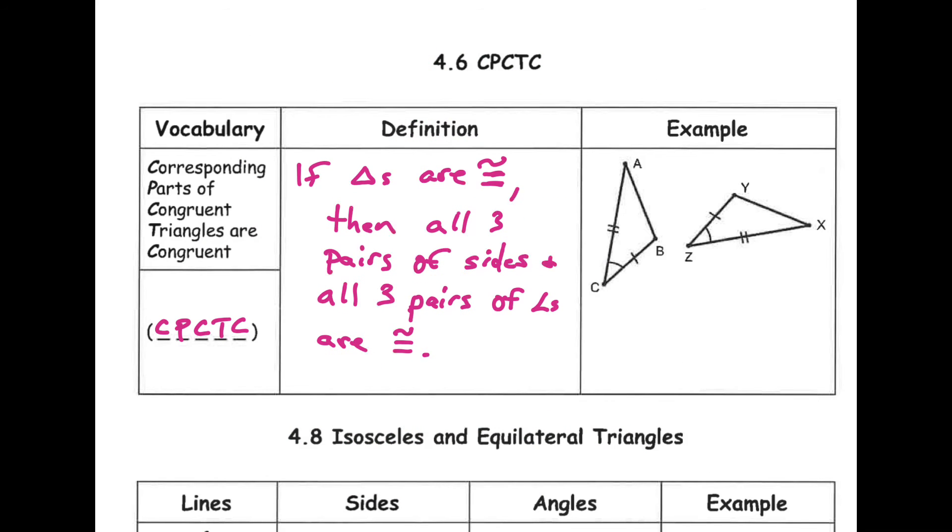Because by now you know, obviously, we only need three things to prove congruent. So, for example, these triangles are congruent by side, angle, side.